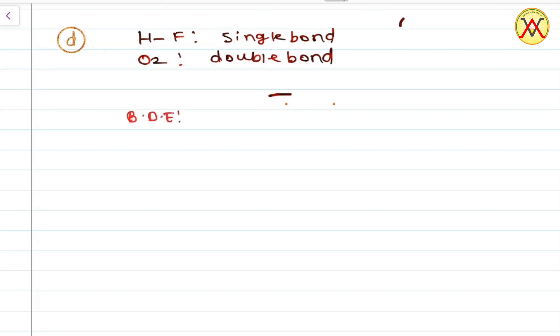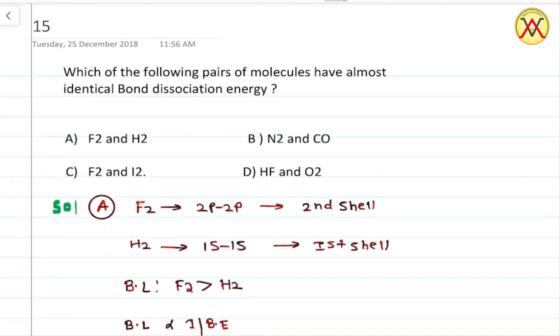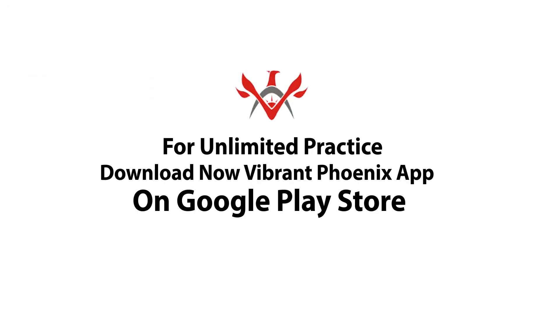Obviously, BDE of molecule possessing double bond character is greater than molecule possessing single bond character. So the correct option is C.